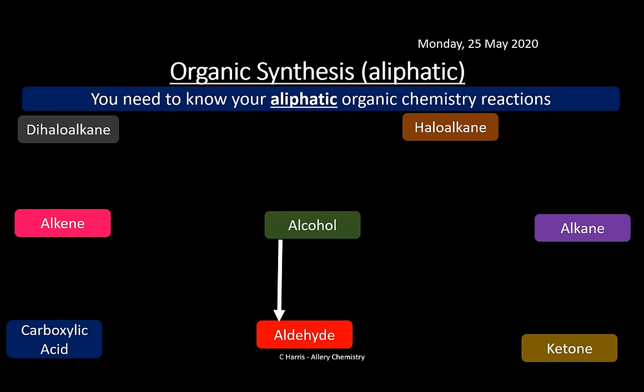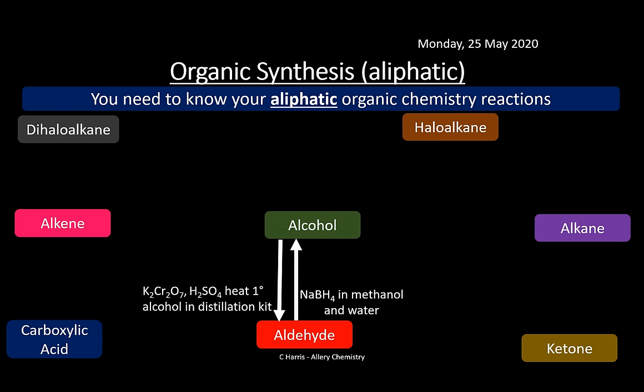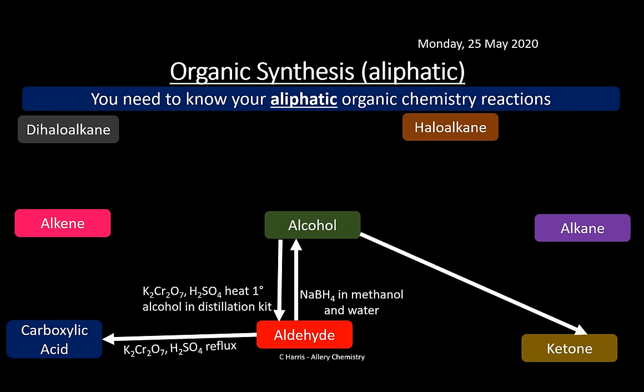Alcohol to aldehyde: potassium dichromate, sulfuric acid, heat — primary alcohols are distilled off to form the aldehyde. Aldehyde to alcohol: sodium borohydride (NaBH₄) in methanol and water — that's your reducing agent. Aldehyde to carboxylic acid: potassium dichromate (oxidising agent), sulfuric acid, under reflux. Alcohol to ketone: potassium dichromate, sulfuric acid, heat — using a secondary alcohol with a reflux kit.